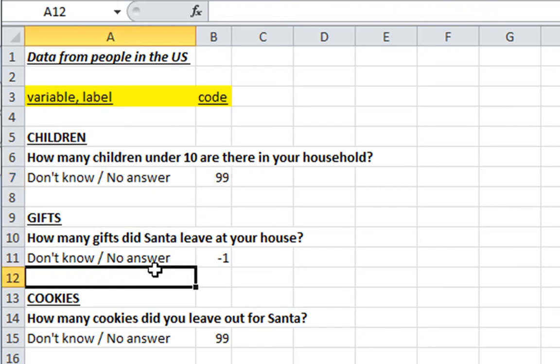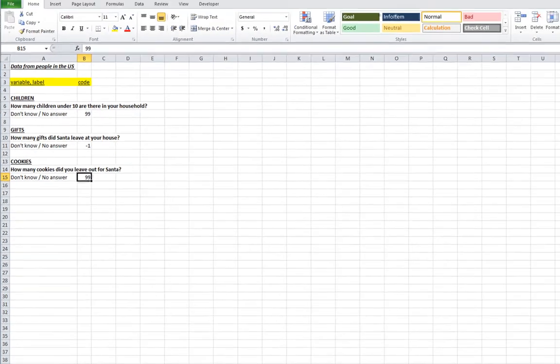Gifts: How many gifts did Santa leave at your house? You can say don't know, no answer. In this case this was coded as a negative 1. Obviously numbers would be valid values that are non-negative. And cookies: How many cookies did you leave out for Santa? Don't know, no answer is a 99. As we go forward we want to make sure that we exclude any missing values for data that we're interested in analyzing.